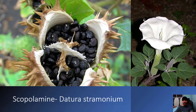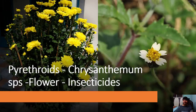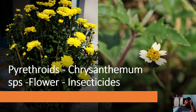Another plant is Datura stramonium, which contains the alkaloid scopolamine. Another plant is Chrysanthemum — there are many varieties. Chrysanthemum species, including Tridax procumbens, commonly called gaddi chamanti, has the alkaloid called pyrethroids. Pyrethroids are useful to kill insects — smoke from these leaves inside rooms can eradicate mosquitoes.